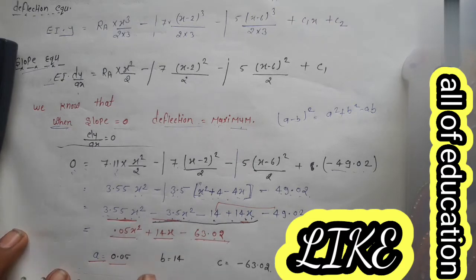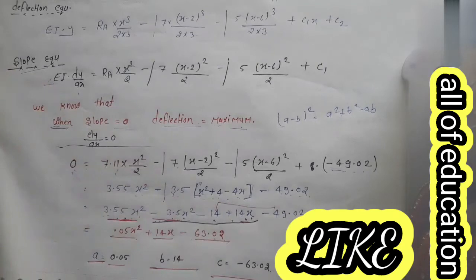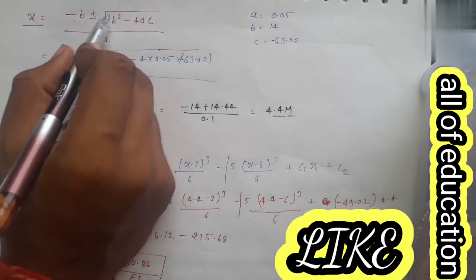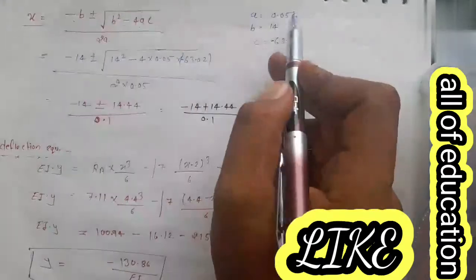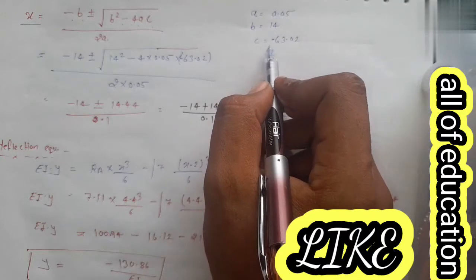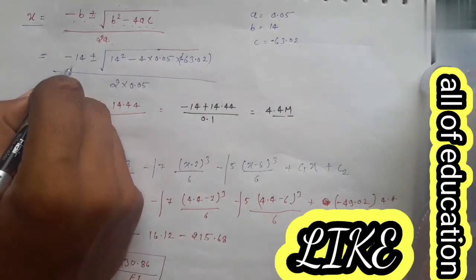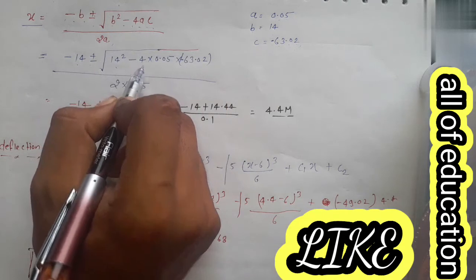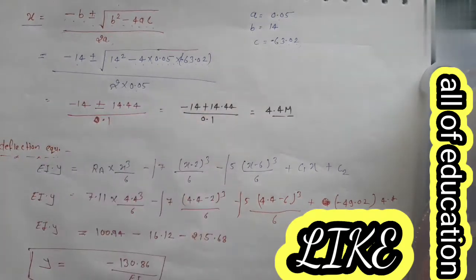Quadratic equation 0.05x² + 14x − 63.02 = 0 के लिए: a = 0.05, b = 14, c = −63.02। Quadratic formula: x = (−b ± √(b² − 4ac)) / 2a। Values डालते हैं: x = (−14 ± √(14² − 4 × 0.05 × (−63.02))) / (2 × 0.05)। पहले under root को solve करते हैं: √(196 + 4 × 0.05 × 63.02)।